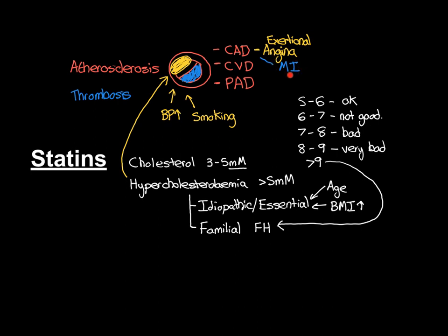Heart attacks can kill you straight away. If they are big enough and bad enough, they can cause complete electrical chaos within the heart. Remember, the heart beats only because of a precisely ordered array of electrical activity. If a large portion of the heart is dying, it may completely disrupt the electrical signaling and lead to absolute chaos — causing the heart to stop beating. This is a fatal cardiac arrhythmia that causes cardiac arrest, which is when the heart stops beating.